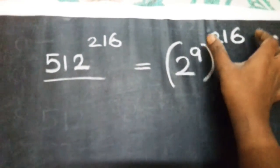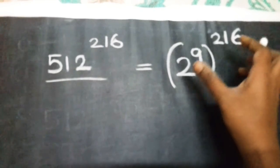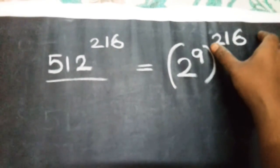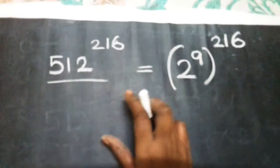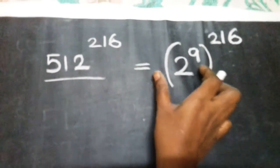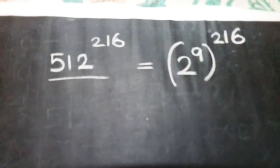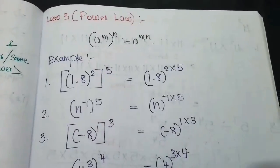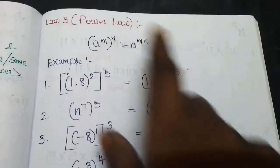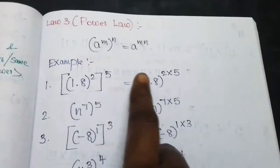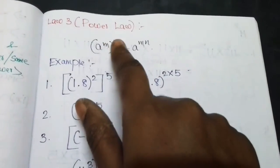Using the power-to-power law of exponents, we will multiply. Base stays as it is; power to the power, we will multiply. We already have the law of exponents — that is, power to the power: base stays, powers multiply.